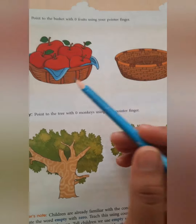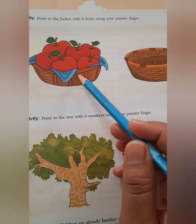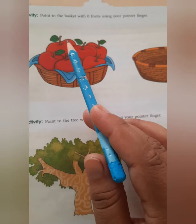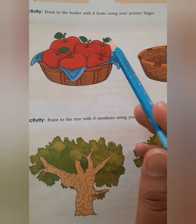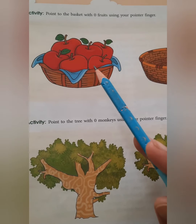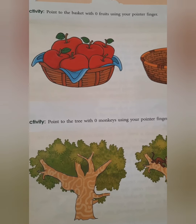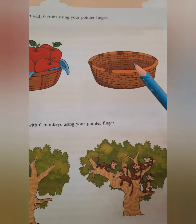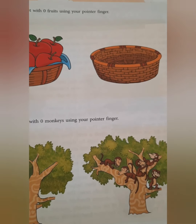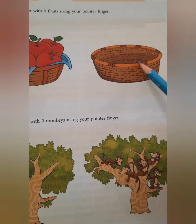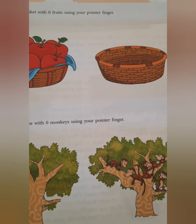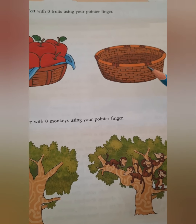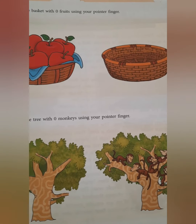Now look at these baskets. In this basket there are one, two, three, four, five and six apples. Is basket mein kitni apples hain? Six apples. And look at the other basket — is mein ek bhi apple nahi hain. So this is an empty basket, and we can say zero apples.